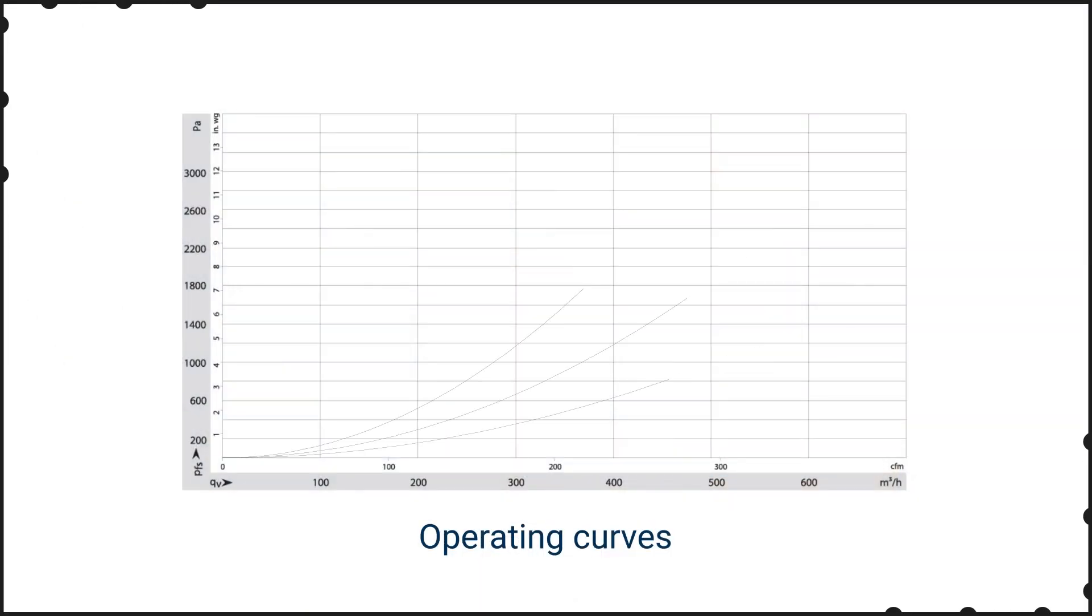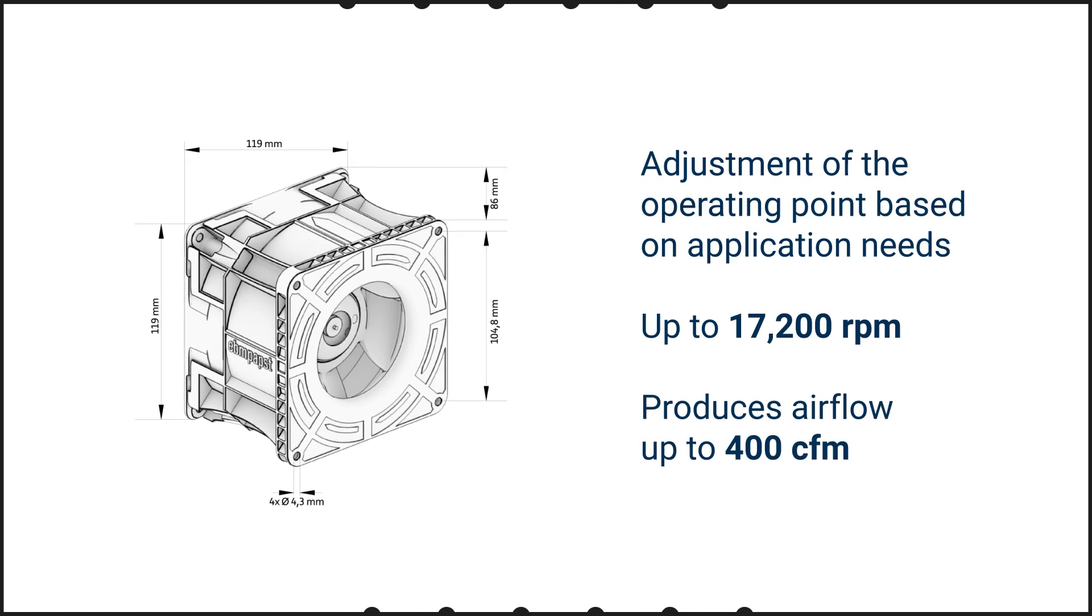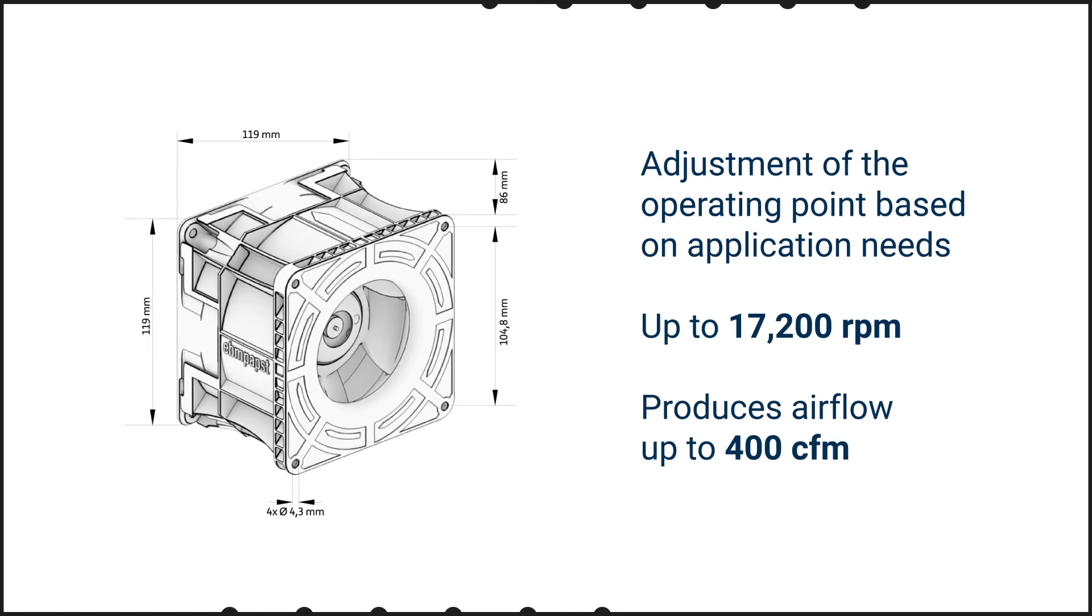These fans feature a three-phase, energy-efficient GreenTech DC motor with variable speed control and a tachometer output. This allows for adjustment of the operating point based on application needs, with the ability to reach up to 17,200 RPM and produce airflow up to 400 CFM.